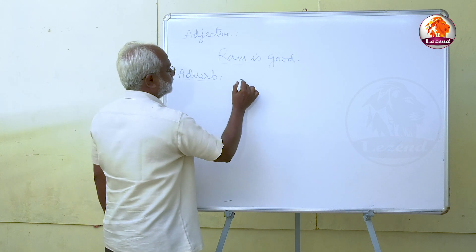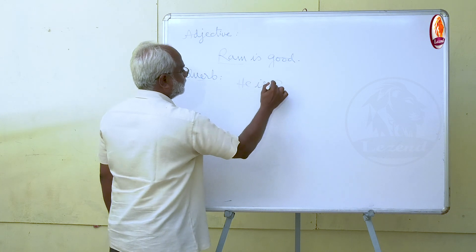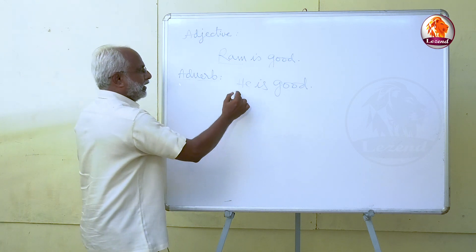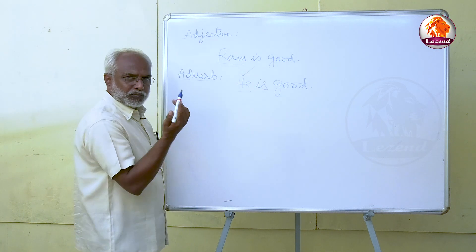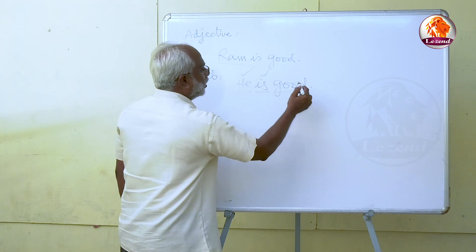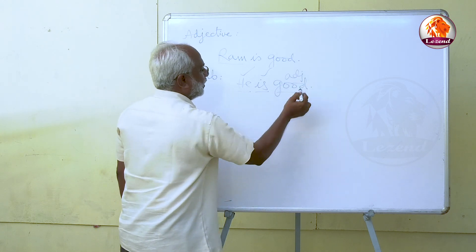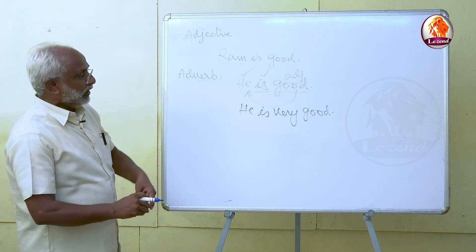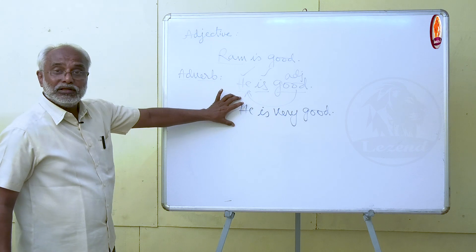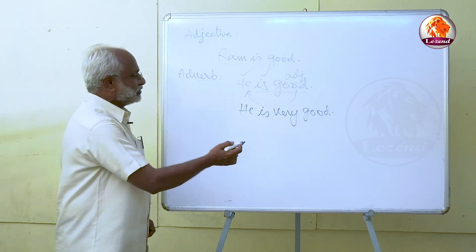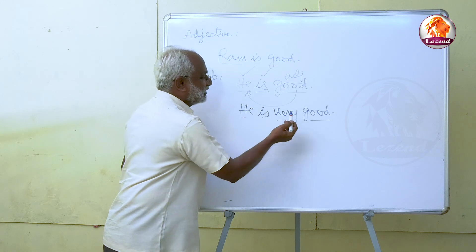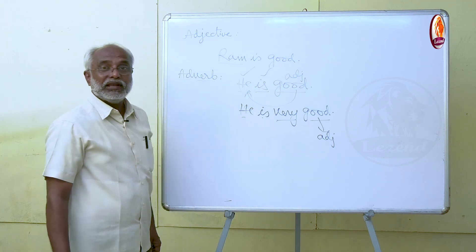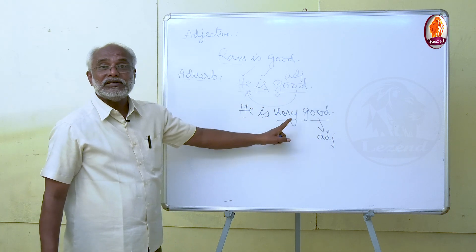Consider: 'He is good' is a sentence. He is a noun or pronoun, 'is' is the verb, 'good' is an adjective because it is qualifying this noun. Now 'He is very good' is also a sentence — here 'very good' shows that 'very' is adding something to the adjective 'good'.